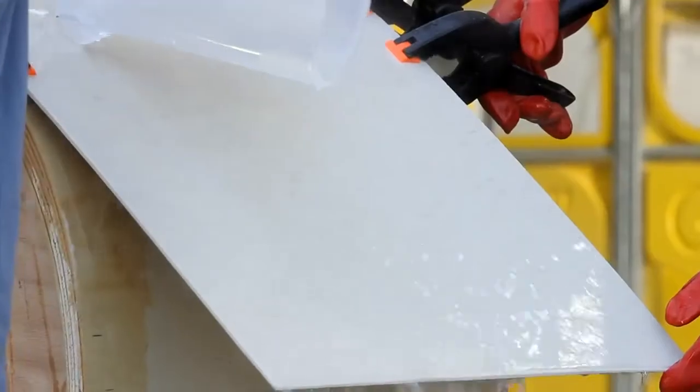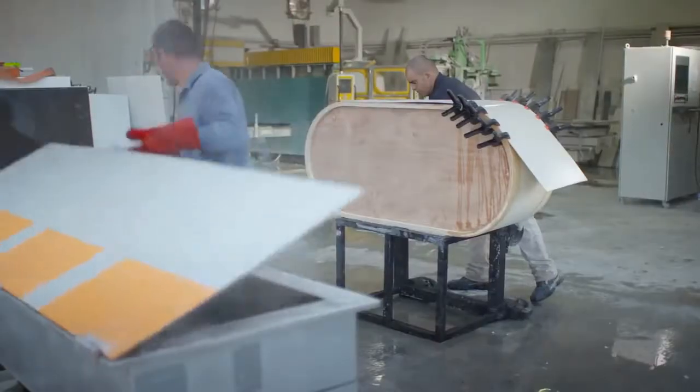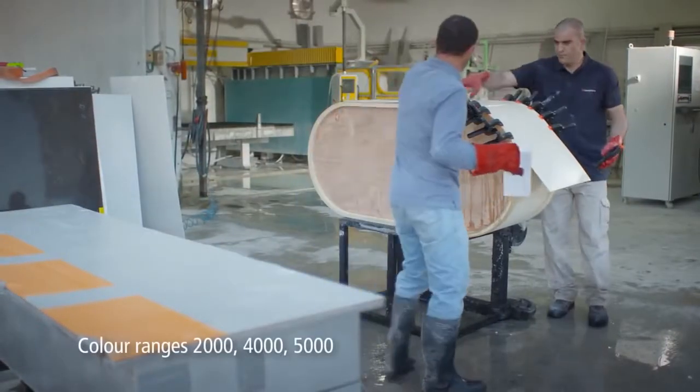Some Caesarstone colors are more suitable for thermoforming than others. These are the 2000, 4000, and 5000 ranges.